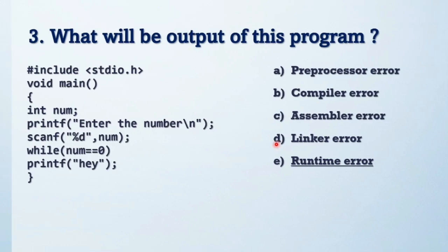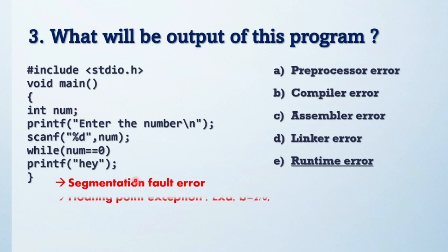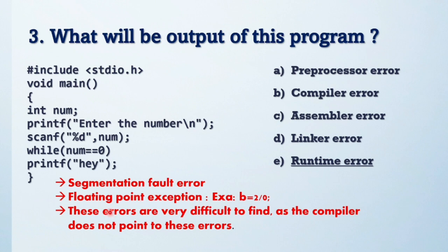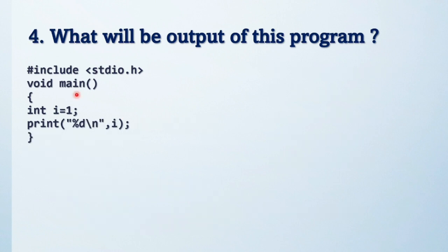If I input zero, it prints 'hi' infinitely because of the while loop. So the output is a runtime error. In runtime error, there is one more type: floating point exception. If you give any input number to divide by zero, it will generate a floating point exception during runtime. Division by zero means floating point exception — these errors are very difficult to find because the compiler does not point to them; they occur during execution.